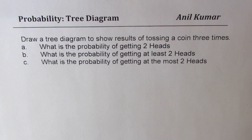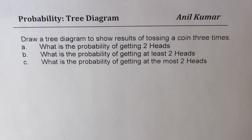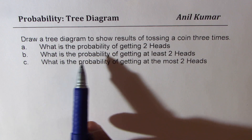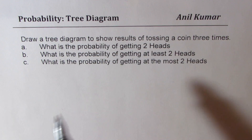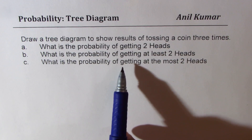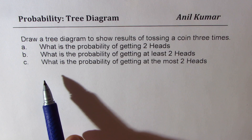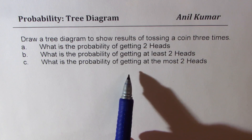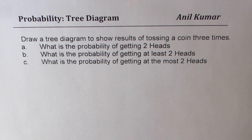I'm Anil Kumar. Here is an excellent question on probability which we are going to answer with the help of a tree diagram. The question is: draw a tree diagram to show results of tossing a coin three times. What is the probability of getting two heads? What is the probability of getting at least two heads? Part C is what is the probability of getting at most two heads. These three terms confuse students many times and therefore I'm taking them together.